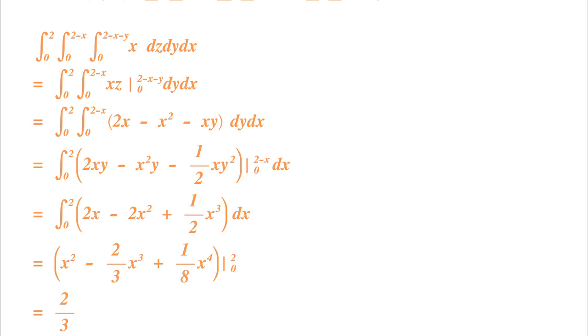We have our middle integral, if I can call it that now, with respect to y. Still we have the dx left, and that's easy to do. You see it there. And when we replace the values going from 0 to 2 minus x, for every y that we have in this 2xy minus x squared y minus half xy squared, we are left with 2x minus 2x squared plus half x cubed.